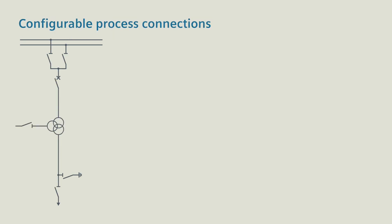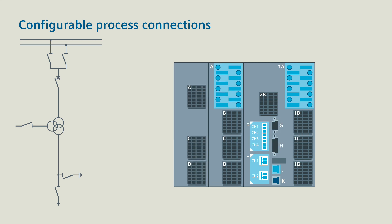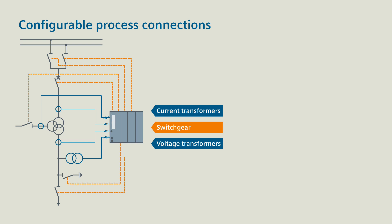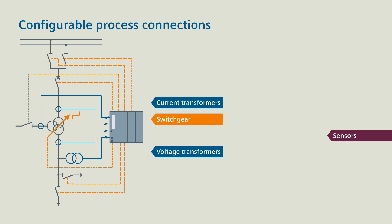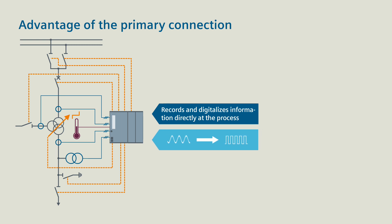An important prerequisite for an optimum primary connection is the requirement-specific configurable process connections of the C-Protek merging unit. These are, for example, connections for current transformers and voltage transformers in conventional form or in low-power design, connections for controlling and monitoring switchgear such as circuit breakers, isolators and tap changers, but also connections for various sensors for measuring temperature, pressure and other physical quantities. The advantage of this primary connection: the C-Protek merging unit records and digitalizes all information directly at the process.